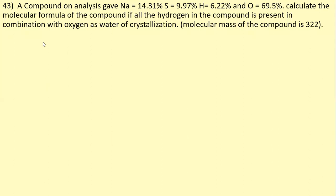Now we move on to question number 43. A compound on analysis gave: sodium 14.31%, sulfur 9.97%, hydrogen 6.22%, oxygen 69.5%. The question asks to calculate the molecular formula. A hint is given: all the hydrogen in the compound is present in combination with oxygen as water of crystallization. The molecular mass of the compound is also given.